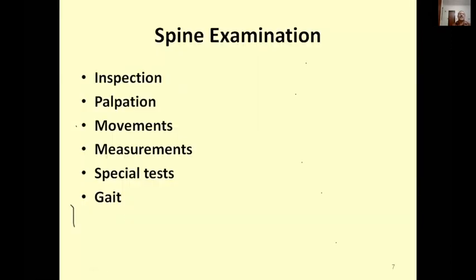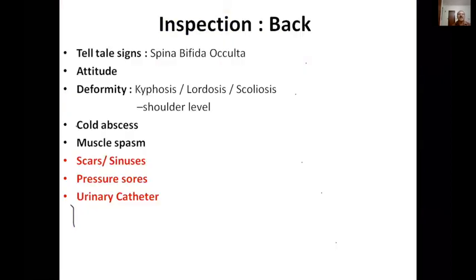For spine examination we do inspection, palpation, movements, measurements, special tests, and gait. On inspection, look for telltale signs of spina bifida occulta, attitude, deformities, cold abscess, and muscle spasms. Also look for scars and sinuses (active or healed), pressure sores and their grade, and whether the patient has an indwelling Foley's catheter.